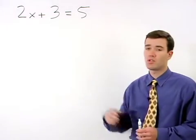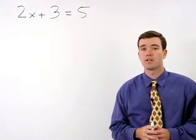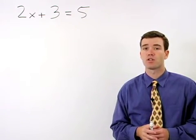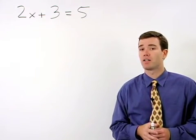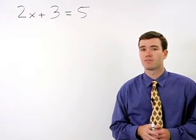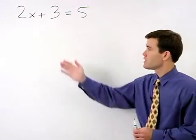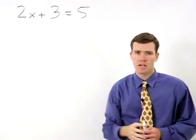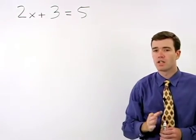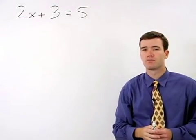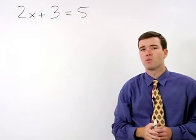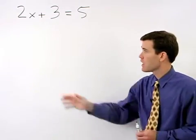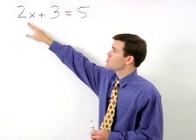To solve for x in the equation you see here, our goal is the same as it was for the problems in the previous section: to get x by itself. The only difference is that there's more stuff happening to the x here, so it's going to take more work to get x by itself. Our first step will be to isolate the term containing x, which in this case is 2x.